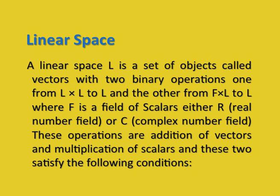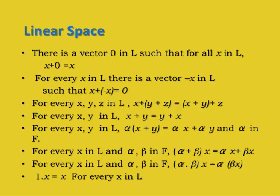First, we define a linear space, which is a set of objects called vectors with two binary operations: one from L×L to L, and another from F×L to L, where F is a field of scalars, either the real number field or the complex number field. These operations are addition of vectors and scalar multiplication. There is a vector 0 in L such that x + 0 = x for all x in L; for every x in L there is a vector −x such that x + (−x) = 0; addition is associative and commutative. Together, these four properties make L an abelian group with respect to vector addition.